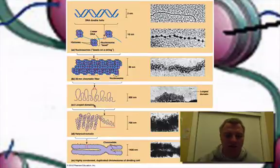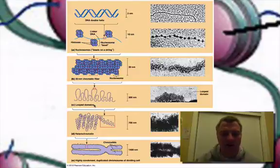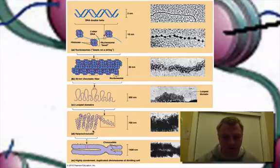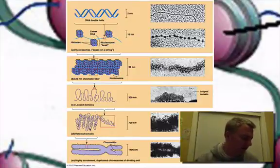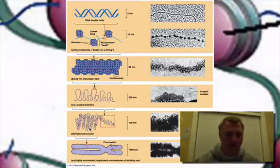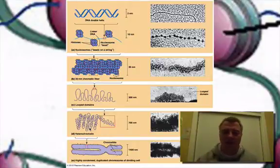Those looped domains, if you'll notice in this picture when we zoom out a little bit more, they're part of what we call the heterochromatin. Your book does talk about heterochromatin — it's the chromatin that's compacted together so that there won't be any transcription taking place in the heterochromatin.